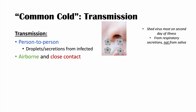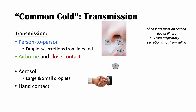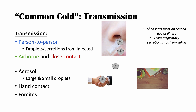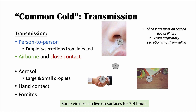The virus can also spread through airborne transmission and close contact. It can be aerosolized in large and small droplets, and it can get onto hands, allowing transmission through hand contact. It can also spread through fomites — indirect objects like tables, desks, and chairs. An infected person who touches a runny nose and then touches a surface can leave the virus there, where it can survive for two to four hours.